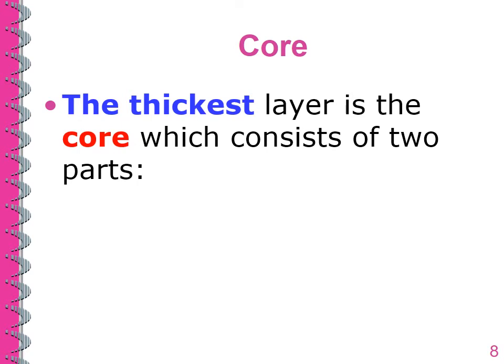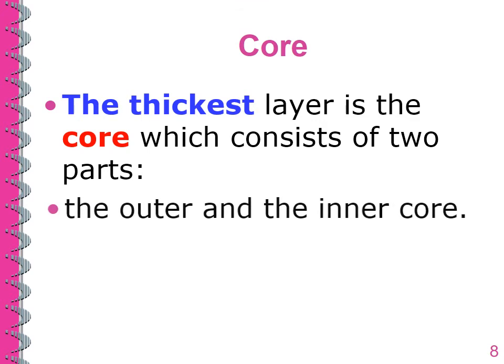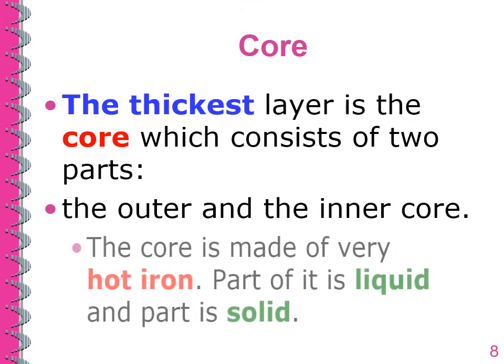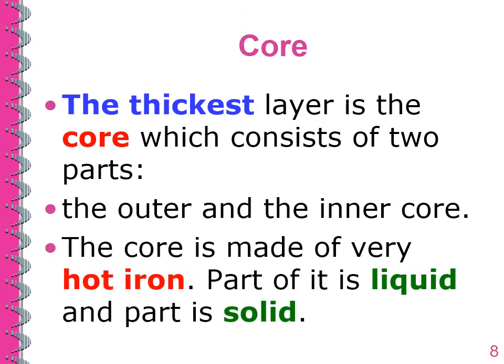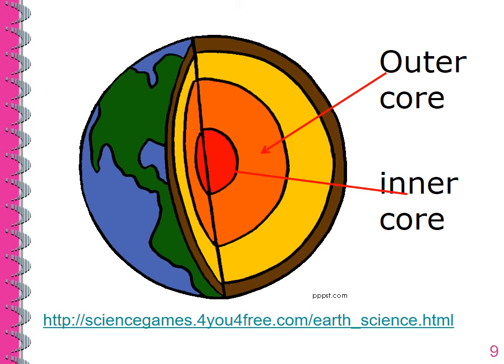The thickest layer is the core, which consists of two parts: the outer core and the inner core. The core is made up of very hot iron. Part of it is liquid and part of it is solid.